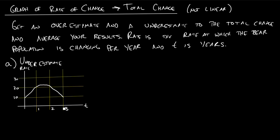How are we going to do that? Remember when we had velocity and we were trying to find distance — we looked at the area under the velocity curve. We're going to do the same thing here, and we're going to look at another way to do it. We're going to draw rectangles that underestimate the area and rectangles that overestimate the area.